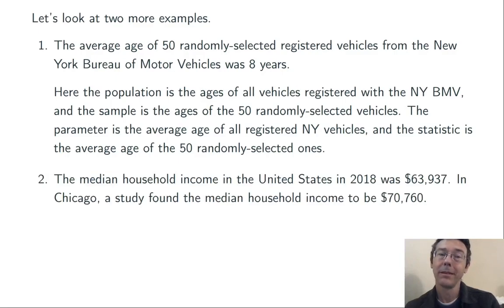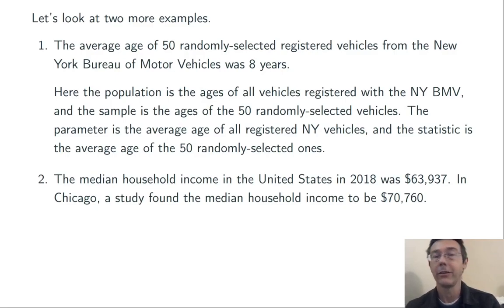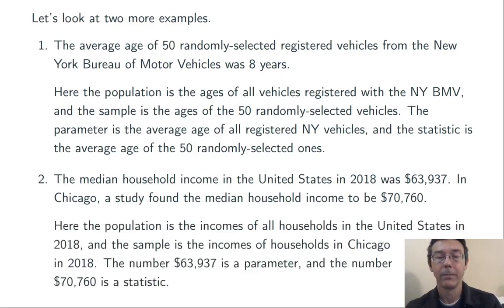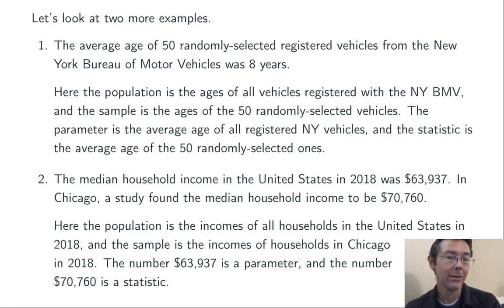Example two: the median household income in the United States in 2018 was $63,937. In Chicago that same year, the median household income was $70,760. The population is going to be the incomes of all households in the United States in 2018, and the sample is going to be the incomes of households in Chicago in 2018.